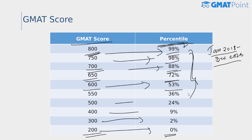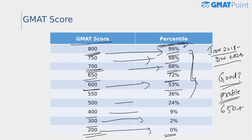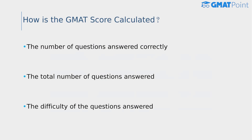The higher the percentile ranking, the more competitive your score is, but focus on maximizing your GMAT score rather than worrying too much about percentiles, as B-schools primarily consider the score itself. A good GMAT score depends on your target B-school, target MBA program, and your profile. Generally, a decent score is around 650 or above — in the 72nd percentile range — but 700 or above is considered a safe score for many B-schools. The average score for students admitted to the top 50 MBA programs was around 660, though 700 or above is recommended to be on the safe side.